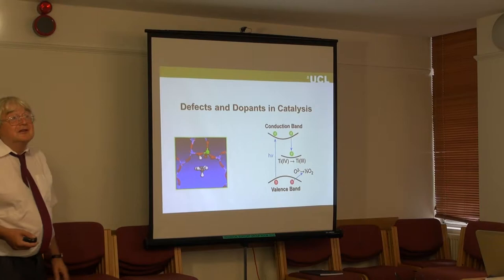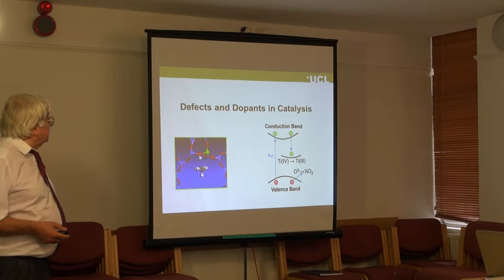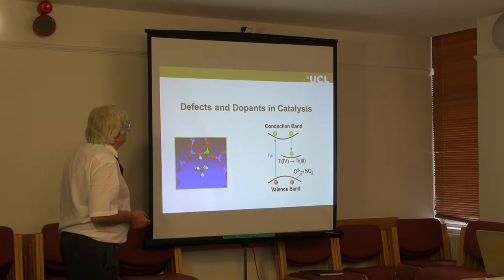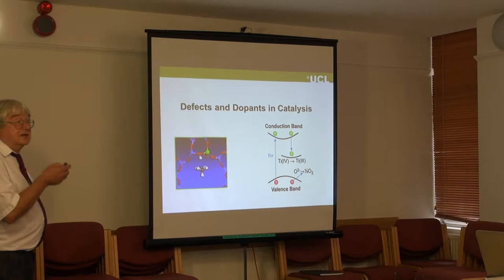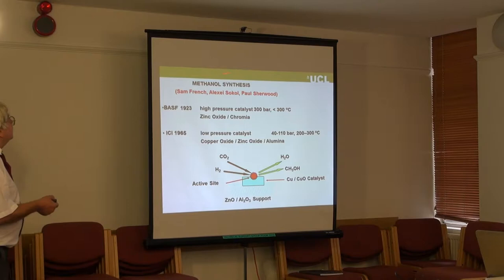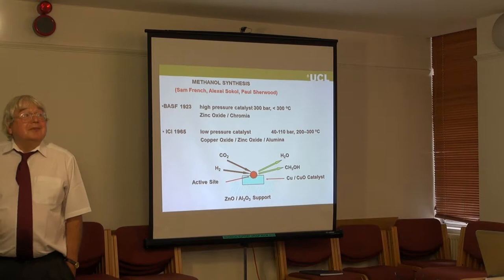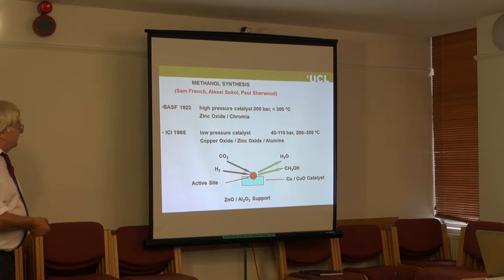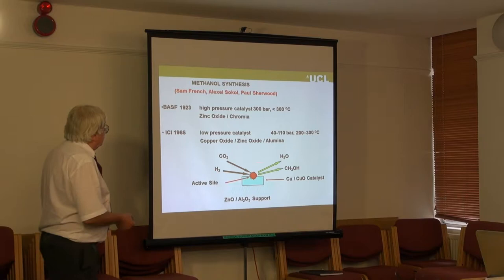The second part concerns defects and disorder in catalysis — a very different area of chemistry, but one where defects play an absolutely crucial role. We're going to look at three important types of catalytic systems. Let's take one of the first absolutely classic areas of catalysis: methanol synthesis. This is a very big industrial process that has been running for well over 100 years.